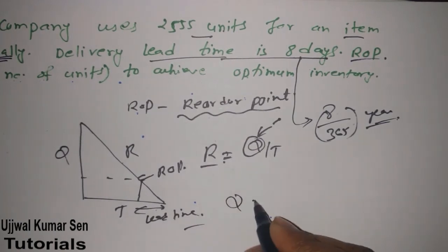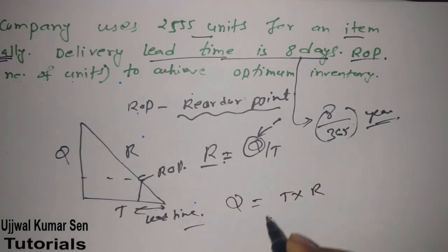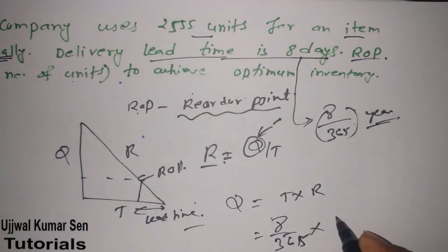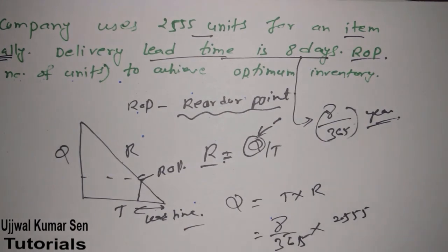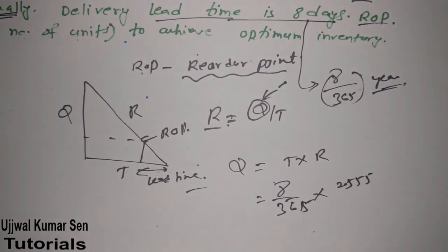What is T here? 8/365. What is R? 2555. We can use a calculator or do it manually. Let's do it manually.